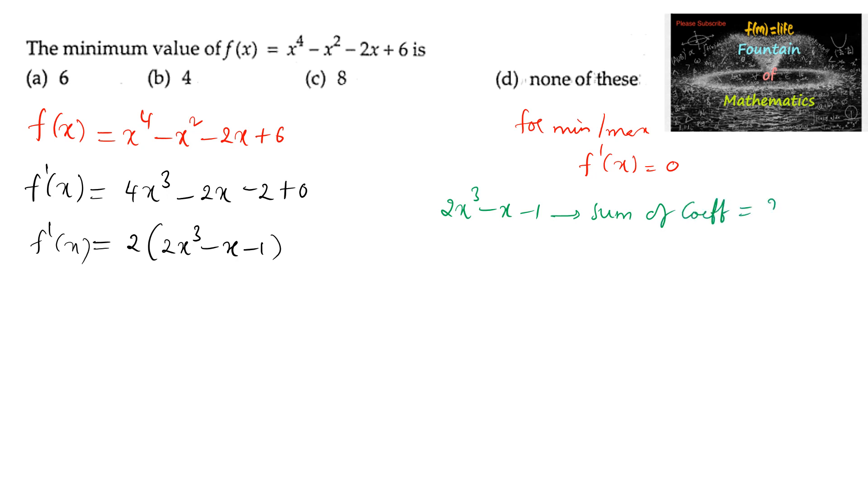sum of coefficients is equal to 2 minus 1 minus 1, which is equal to 0. So we can say x minus 1 is a factor.